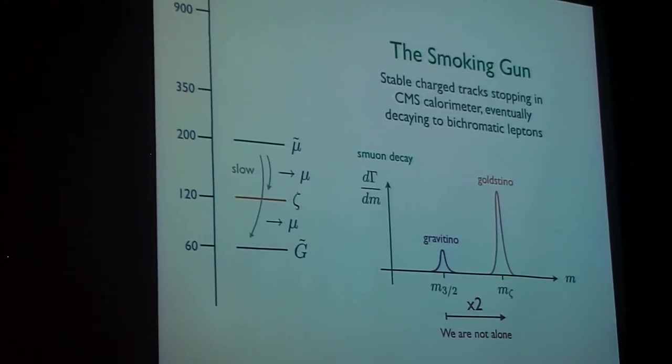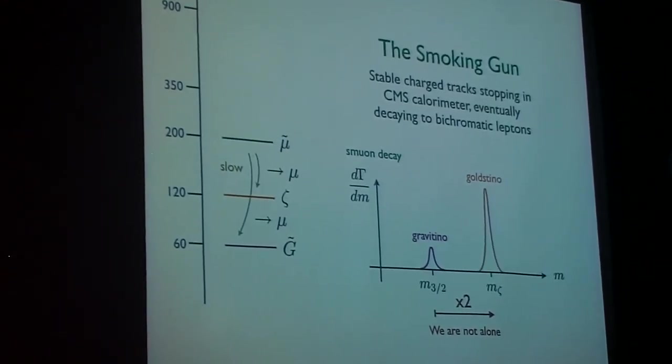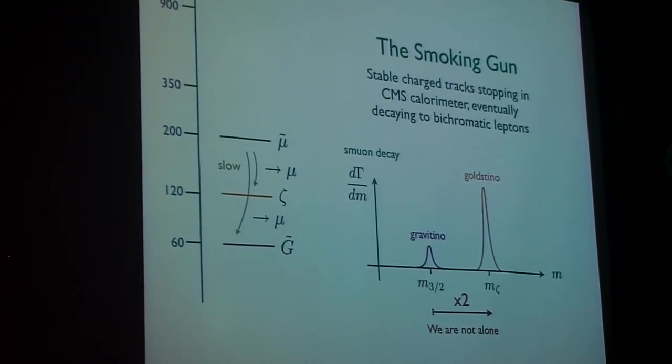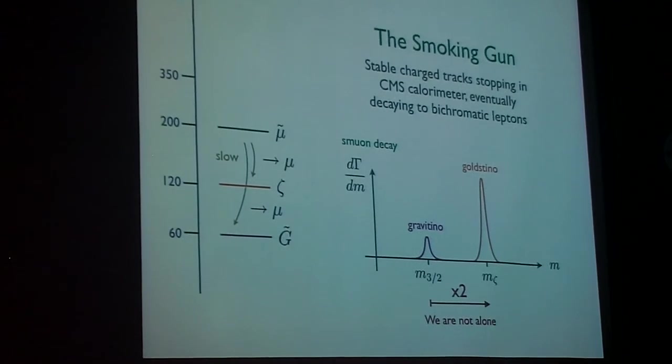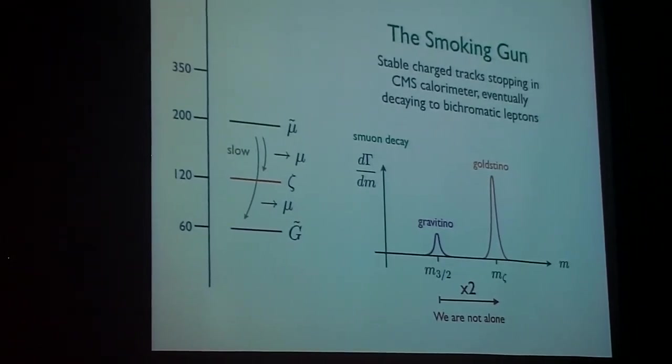...gave us two different peaks, one peak corresponding to our Goldstino, another peak corresponding to their Goldstino, which was eaten by the Gravitino. They're exactly separated by a factor of two up to experimental errors and this slight theoretical uncertainty.